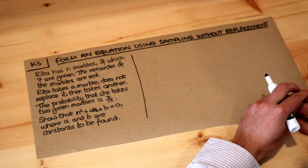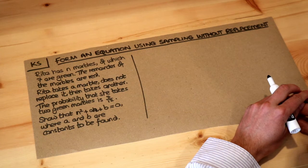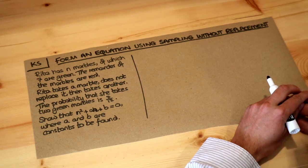Let's read the question. Rita has n marbles of which 7 are green. The remainder of the marbles are red. Rita takes a marble, does not replace it, and takes another.